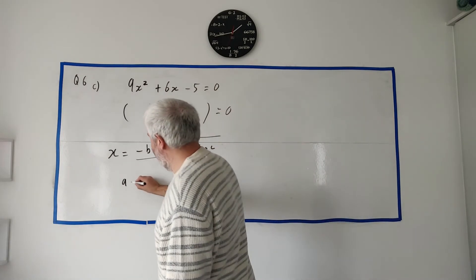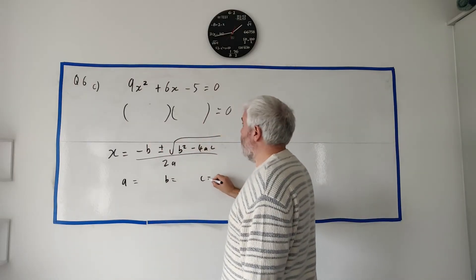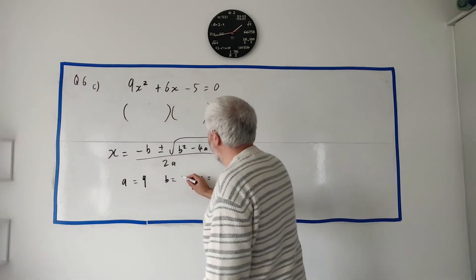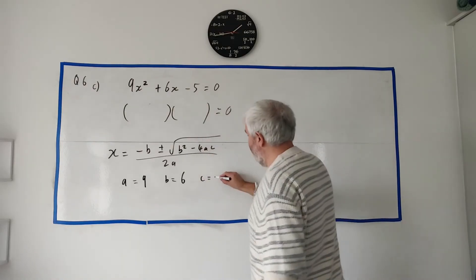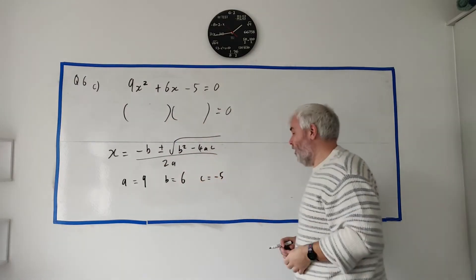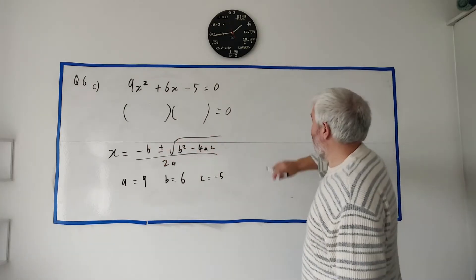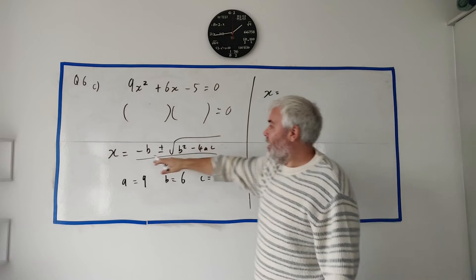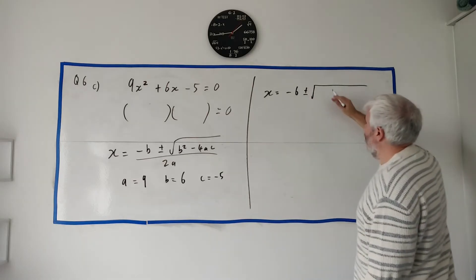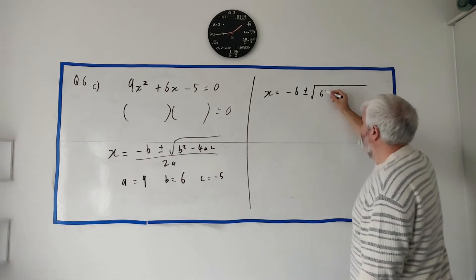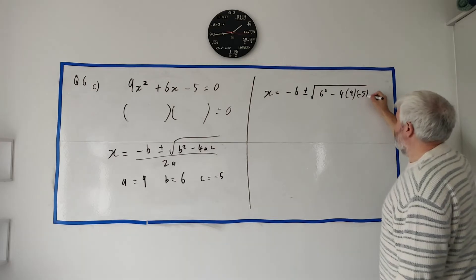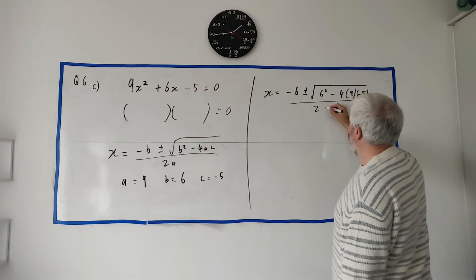Okay, first of all we need to know what a, b, and c are. a is the number in front of the x², which is 9. b is the number in front of this x, which is 6, and c is the number that's there, which is -5. Be careful about the minuses. If this was a minus, this would be a minus. The minuses are included. Okay, so now just let's go ahead and fill out this equation again. x equals, but instead of a, b, and c, we're going to put numbers in. -b, -6, plus or minus the square root of b², 6², minus 4 times 9 instead of a, and -5 instead of c. All divided by 2 times 9.